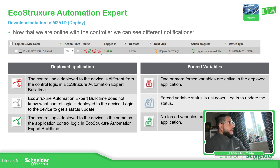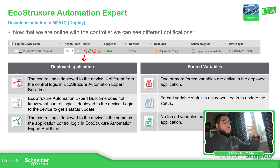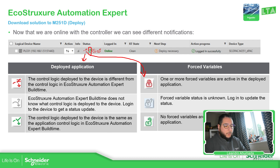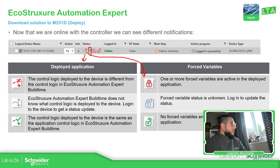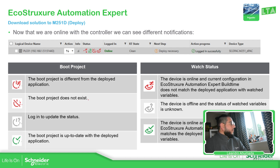As soon as you log in you have different things. This icon over here is about the application — basically it means the application you have on the software is different from what's on the controller. That's why we need to deploy. This lock icon is related to force variables. This one over here is related to the boot project — I have a different application installed there with a different boot project, which doesn't match the actual project I have in the software.